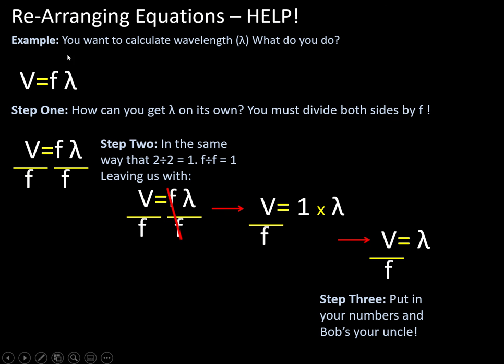So we need to get lambda on its own. So what do we do? Well, we're going to divide both sides by f. So we want to get rid of this f on this side. So we need to divide both sides by f. Whatever you do on this side of the equal sign, you have to do on that side of the equal sign.